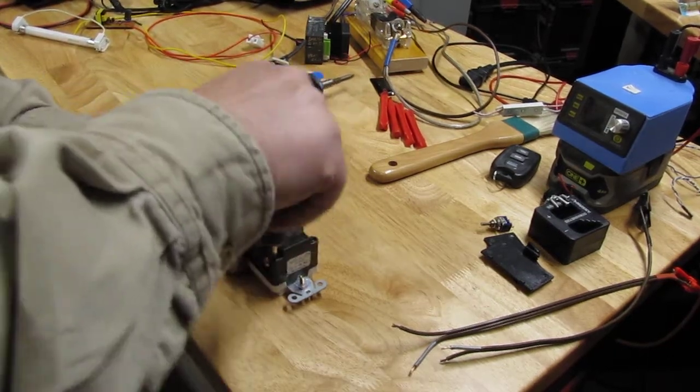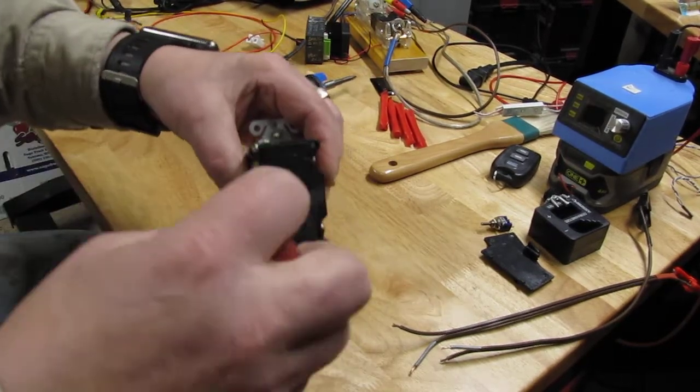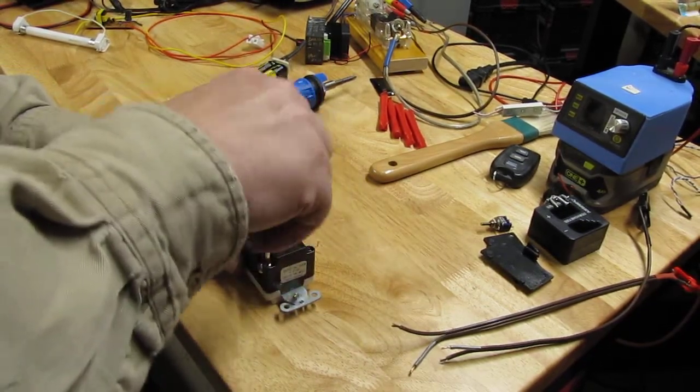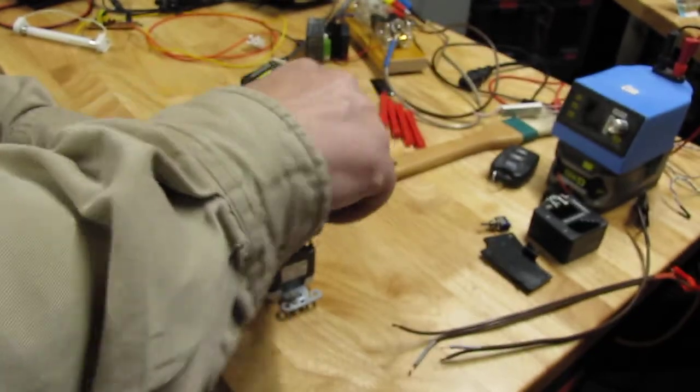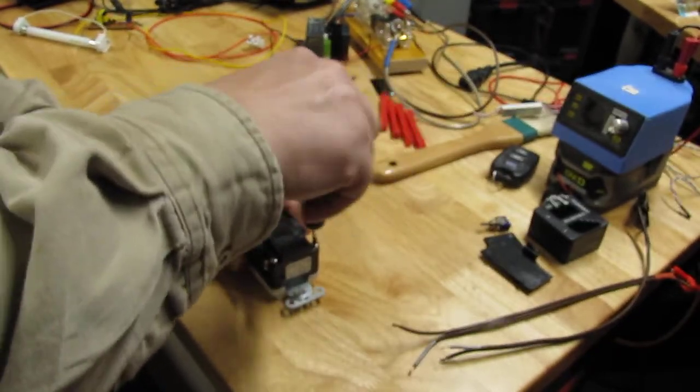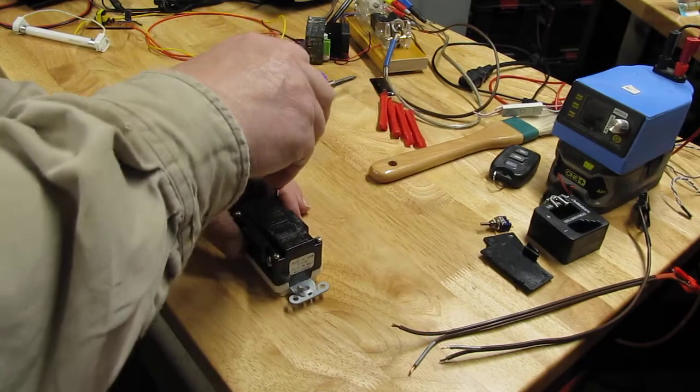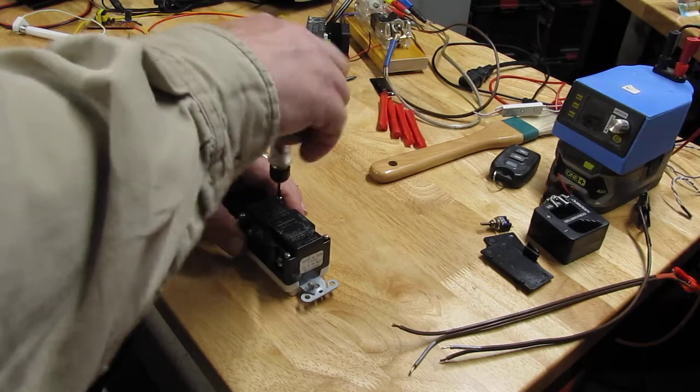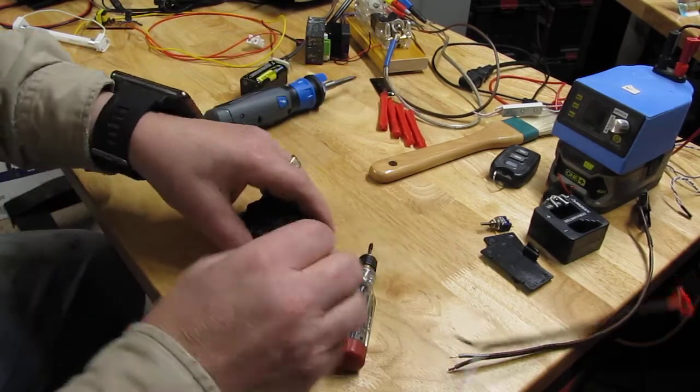So there are four screws in this particular model that hold the two halves together, which means the white part and the black part. I've never taken one apart because they always work, but this one stopped working.